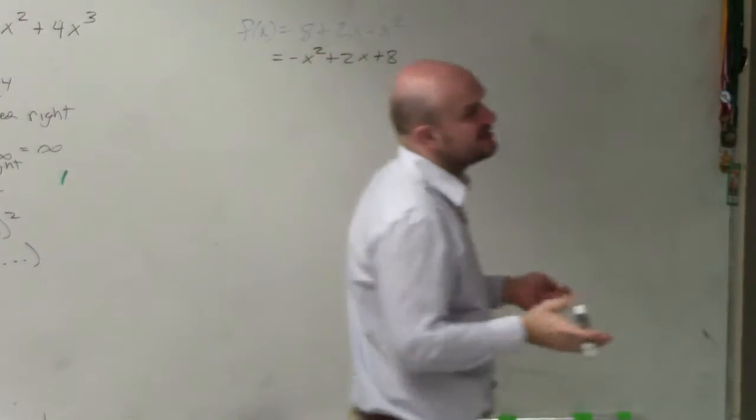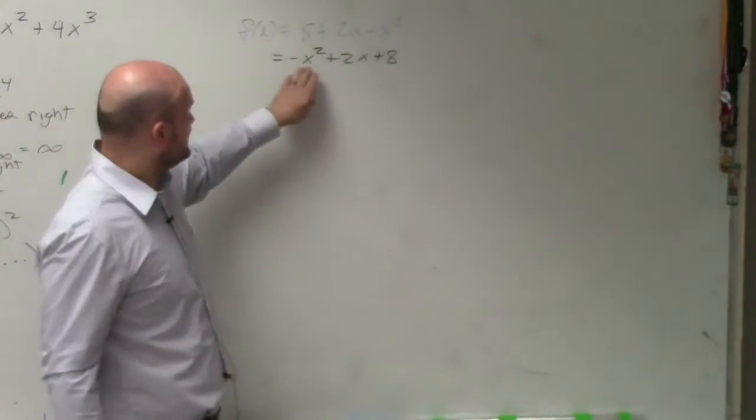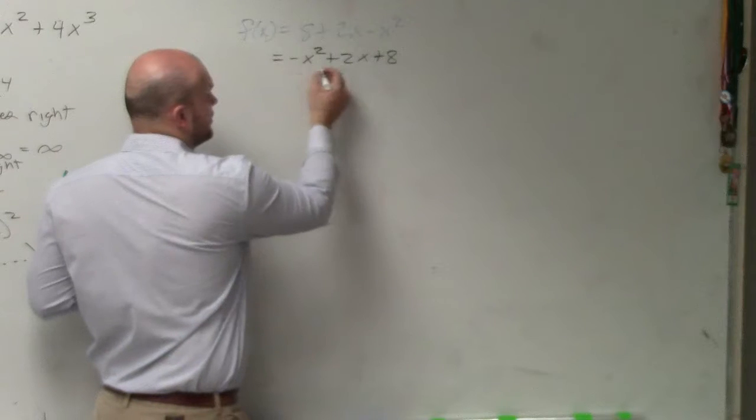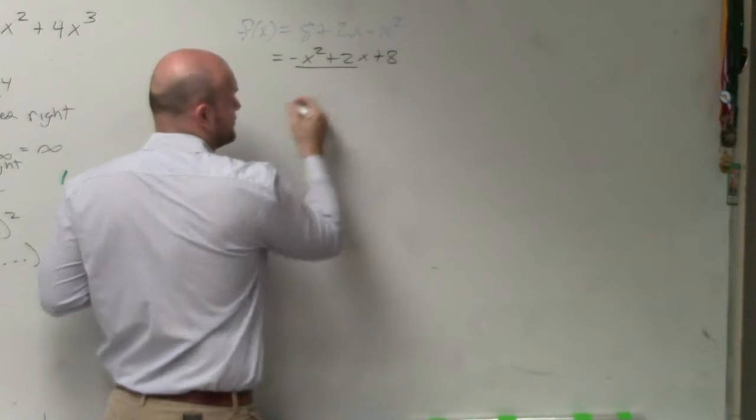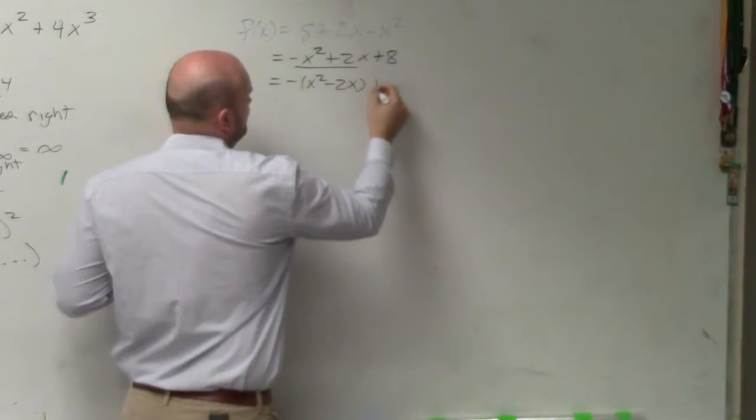However, one thing I said is we can only complete the square when a is equal to 1, positive 1. So I need to factor out a negative 1 here. I'm only going to factor out a negative 1 out of my first two terms. So it's negative x squared minus 2x plus 8.